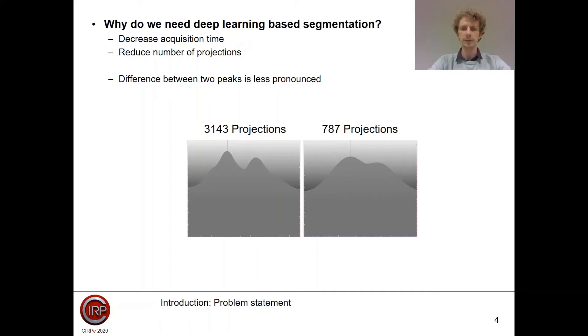But if we look into the grayscale images we can see that there are still some defects inside. That is the reason why we investigated deep learning segmentation techniques to see if we can reduce the number of projections to reduce the acquisition time and still be able to properly segment those low-quality scans.